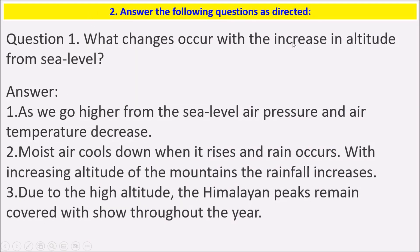Question 2: Answer the following questions as directed. The first one is: what changes occur with the increase in altitude from sea level? As we go higher from the sea level, air pressure and air temperature decrease. Moist air cools down when it rises, and air drainage occurs. With increasing altitude of the mountains, the rainfall increases. Due to the high altitude, the Himalayan peaks remain covered with snow throughout the year.